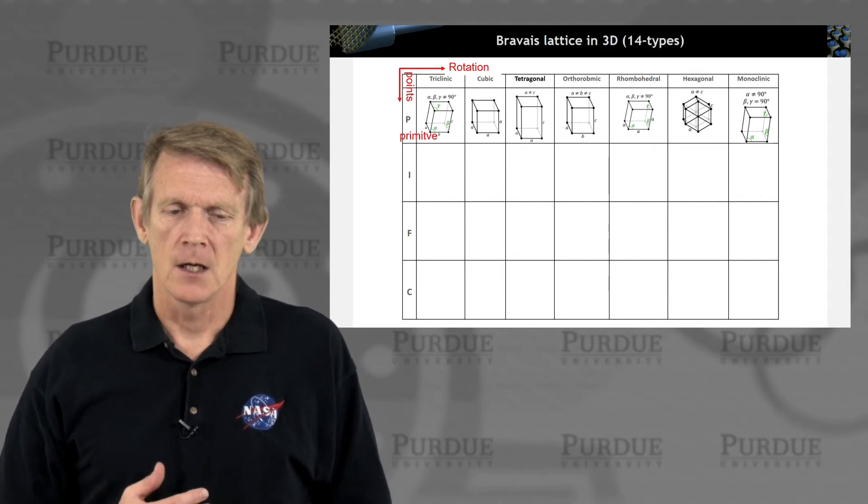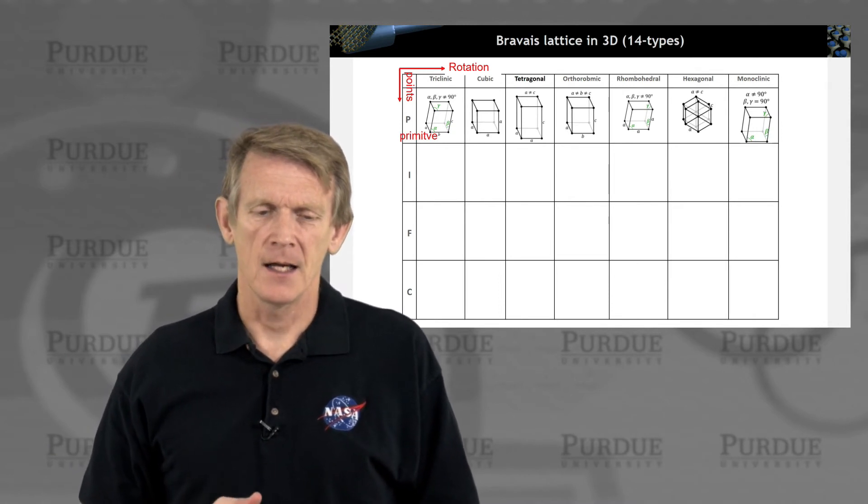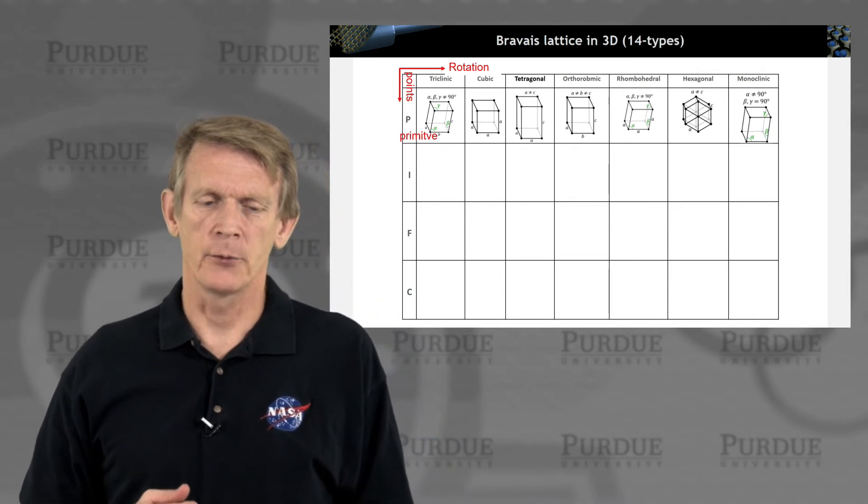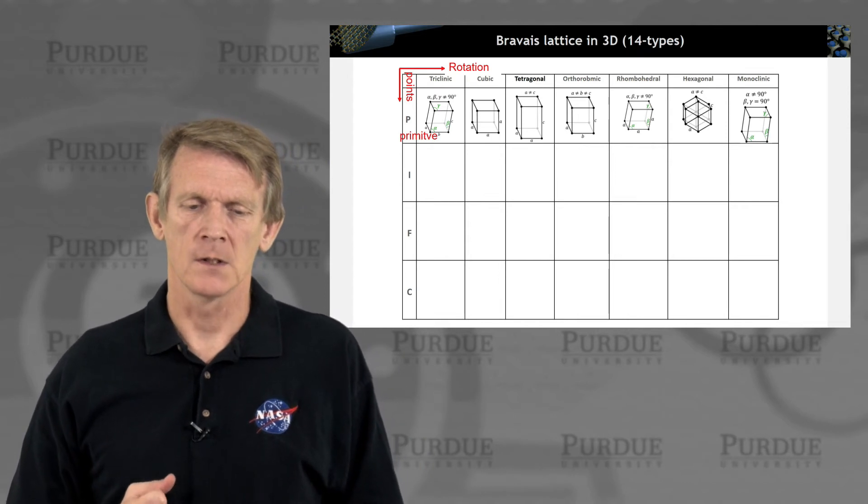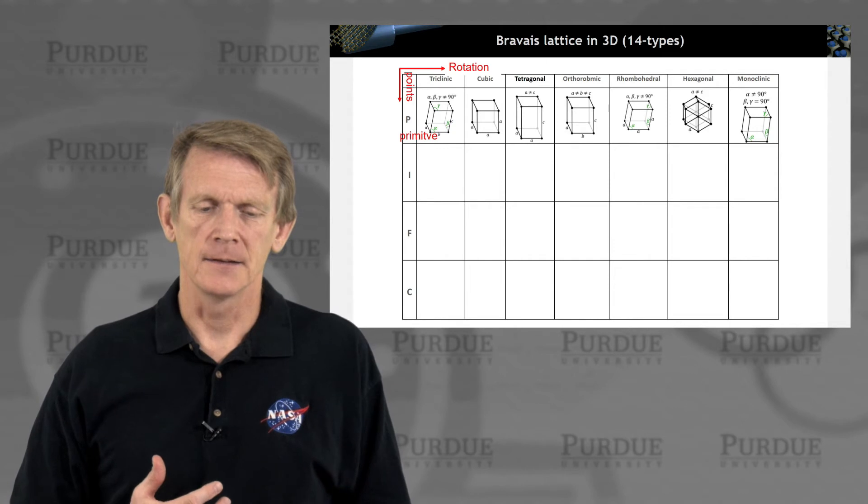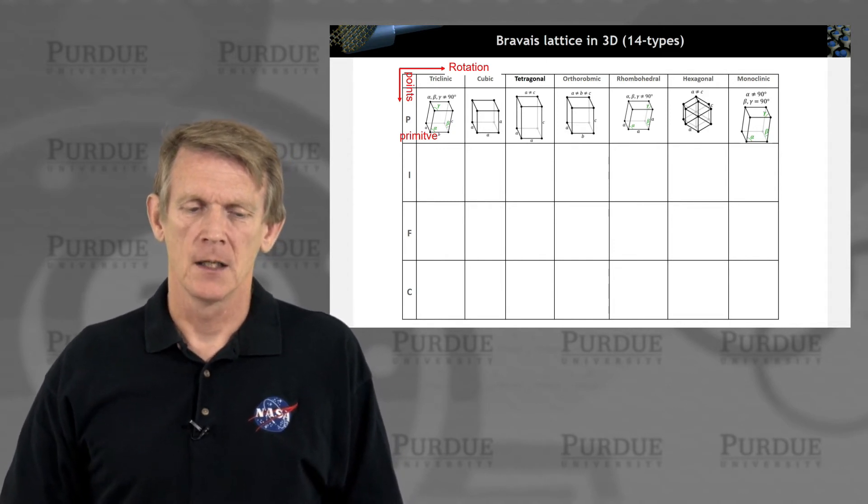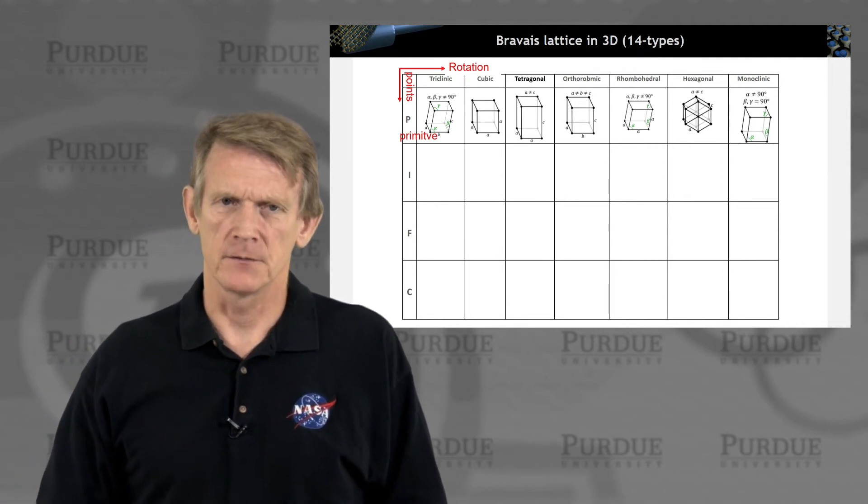So all of these, the first row of Bravais lattices, have a single atom per unit cell. So there's one atom per unit cell. And if you repeat these cells throughout space, you can make up a whole crystal. And these are primitive cells.